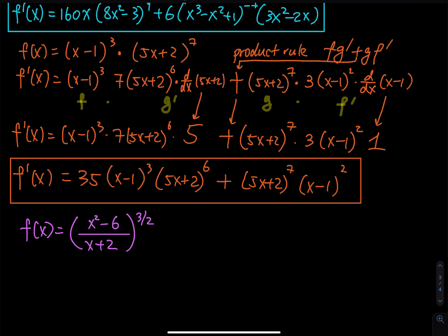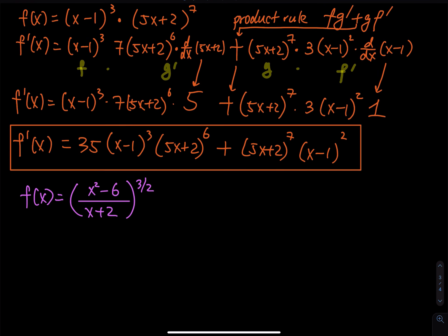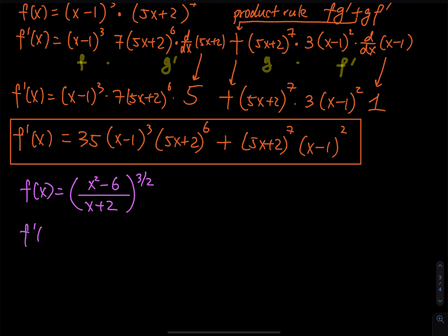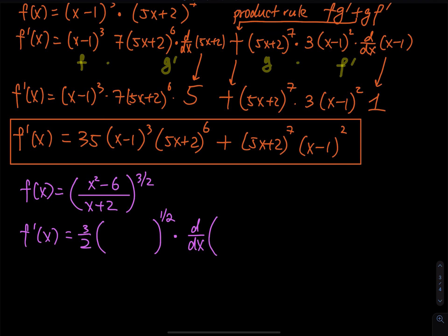The first step is you use the simple power rule to bring down the 3/2. And then using chain rule, you take the derivative of the fraction. When you take the derivative of the fraction, there is a quotient rule. So f prime of x — bring the 3 over 2 down. Whatever that is raised to the 3 over 2 minus 1, which is 1/2, by chain rule, I have to multiply the derivative of the function inside the parenthesis, which is x squared minus 6 divided by x plus 2. Since this is a fraction, this piece is a quotient rule.